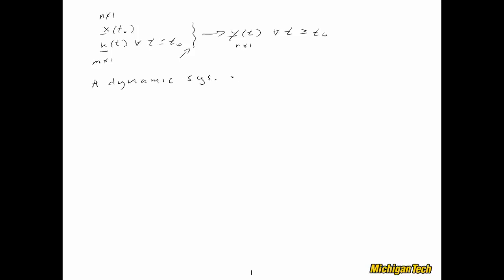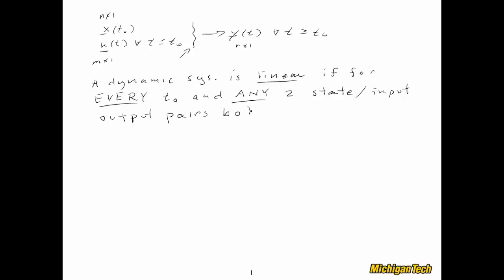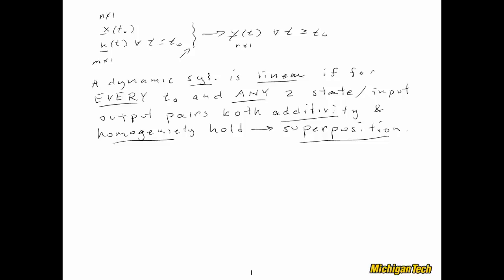Now for the definition of linearity. A dynamic system is linear if, for every t0 and every initial condition you can possibly imagine, and for any two state input-output pairs, both the properties of additivity and homogeneity hold. When that happens, we say the system satisfies superposition. We'll now look at additivity and homogeneity separately.